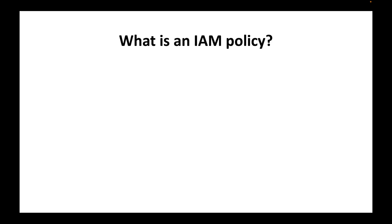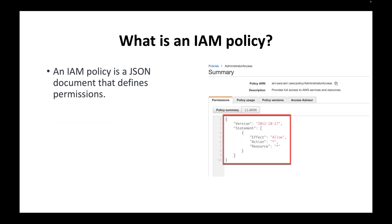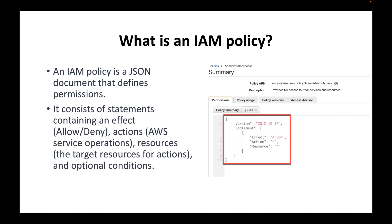The next question is: what is an IAM policy? An IAM policy is simply your permissions. If you want to define what a user, group, or role can do within an AWS account, you define that using an IAM policy. This IAM policy is a JSON document that defines the permissions applicable to that particular entity. The policy consists of statements such as effect — whether you want to allow or deny access — and action, which defines what actions you want to allow, like launching an instance or creating an S3 bucket.